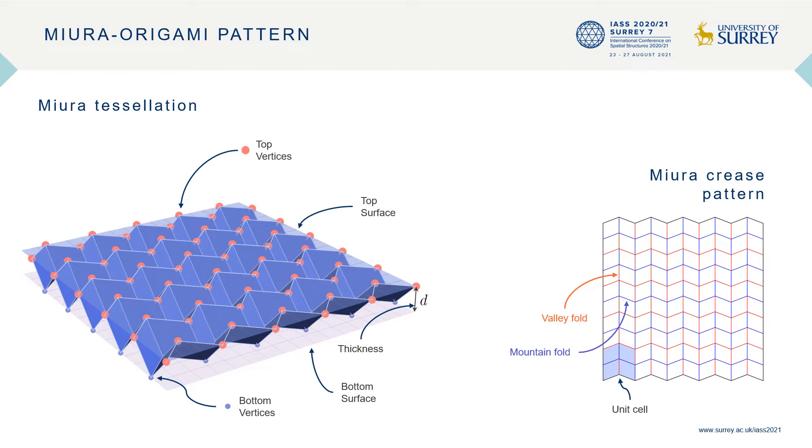The entire geometry of the system can be studied from a single repetitive structure called the unit cell. Since the Miura tessellation is a single degree of freedom deployable structure, the folding angle indicated by the variable gamma uniquely defines the folded state of the entire structure.